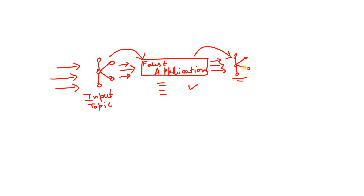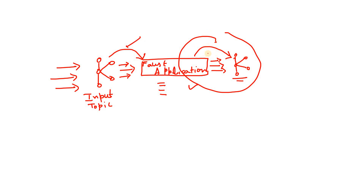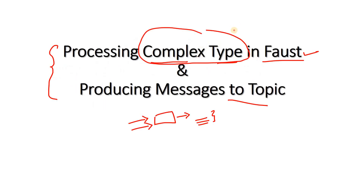We need to understand how a Faust application can produce messages to a topic. Here the Faust application is writing data to a topic, meaning it is acting like a producer. We already understood how Faust acts like a consumer — on the left-hand side it consumes the input stream in real time. So we need to understand the producer part and also how to process complex JSON data in Faust.